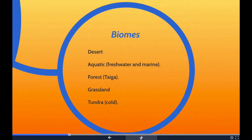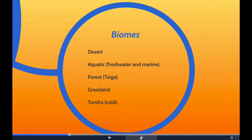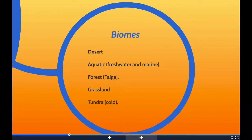We need to be familiar with biomes. A biome is a community of plants and animals that have common characteristics for the environment they exist in. They can be found over a range of continents. Biomes are distinct biological communities that have formed in response to a shared physical climate. A biome is a broader term than habitat — any biome can encompass a variety of habitats.